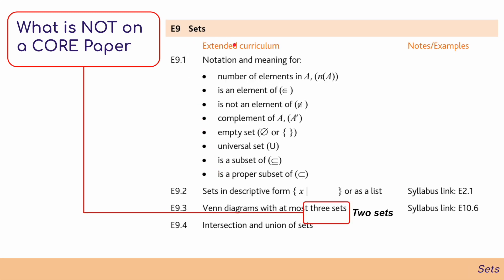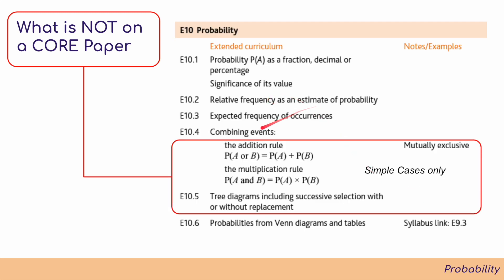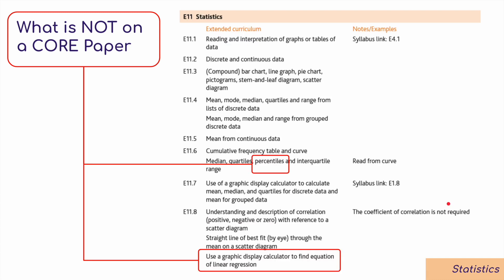For topic nine, Sets, the only addition is that Venn diagrams extend from two sets in core to at most three sets in extended. For topic ten, Probability, combined events, the addition rule, and the multiplication rule have been added, though simple cases including tree diagrams remain in core. For topic eleven, Statistics, the content largely stays the same, but percentiles and the use of a graphic display calculator to find equations of linear regression have been added to the extended curriculum.